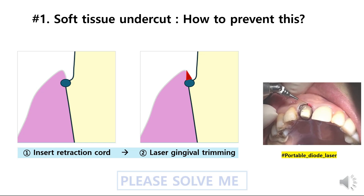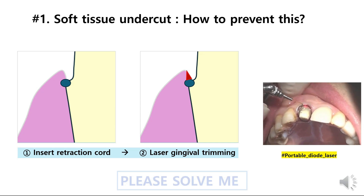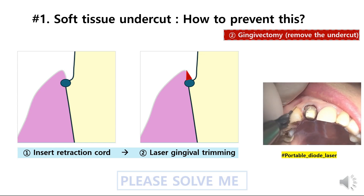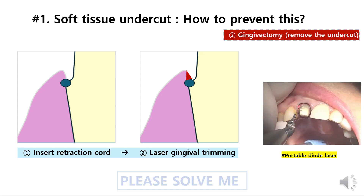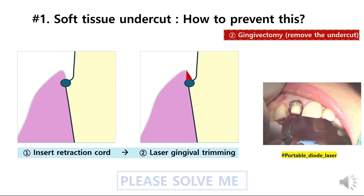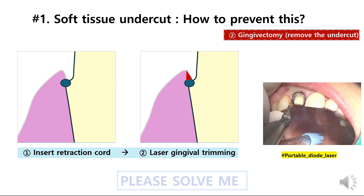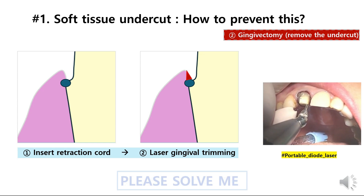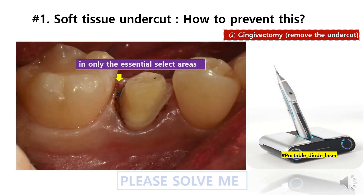Otherwise, we can perform a gingivectomy around the crown margin to remove the soft tissue undercut. I like to use a portable diode laser to perform gingival trimming, because it's portable so it's always ready for when I need to scan. Even though this is less invasive than conventional electrosurgery instruments, some patients still feel it's a bit invasive, so I use this only for necessary areas. My method involves trying my best to insert the retraction cords first, evaluating the soft tissue undercut using a photomirror, and then deciding if laser gingival trimming is really necessary. If so, I will carefully perform this in only the essential select areas.